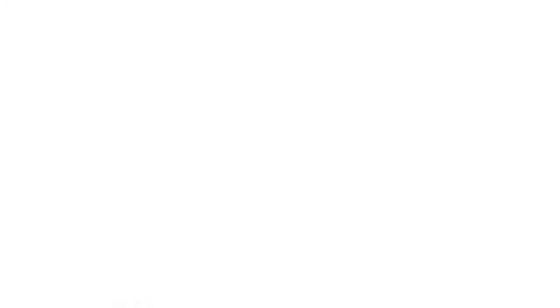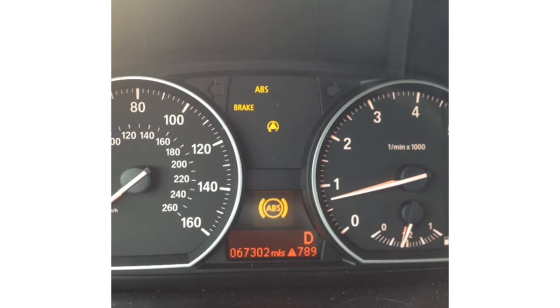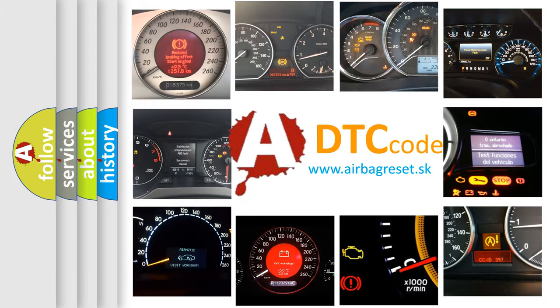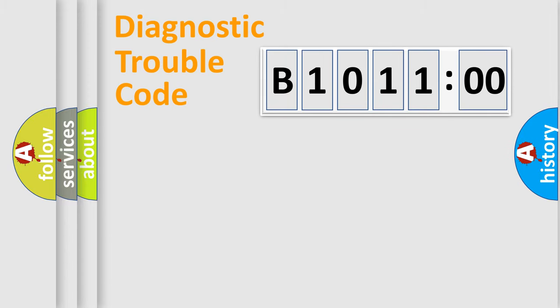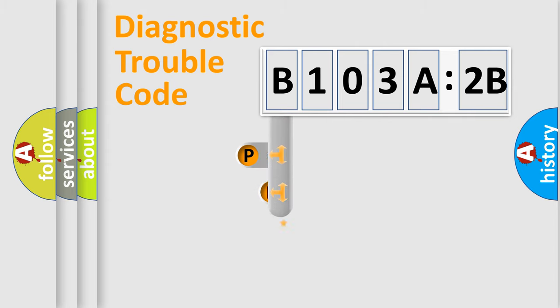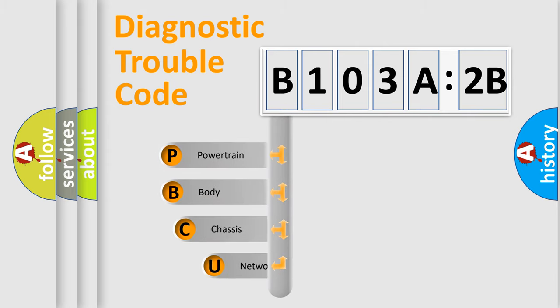First, let's look at the history of diagnostic fault code composition according to the OBD2 protocol, which is unified for all automakers since 2000. We divide the electric system of automobile into four basic units: Powertrain, body, chassis, network. This distribution is defined in the first character code.